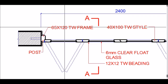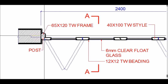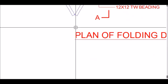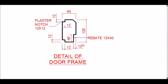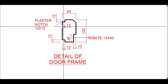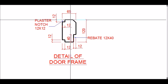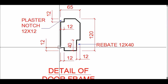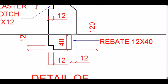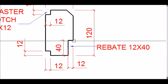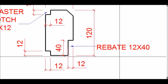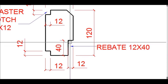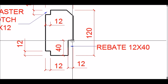Let's look at the frame in more detail — how the notches have been made and the sizes of the members. The total frame section is 65 by 120mm. Within the frame there are two plaster notches of 12 by 12mm on each side, and one more notch called the rebate, which is 12mm deep and 40mm wide — 40mm because the door shutter thickness is 40mm.